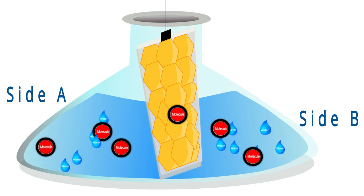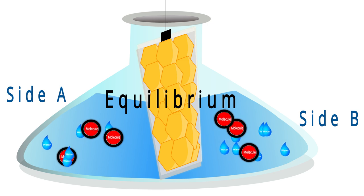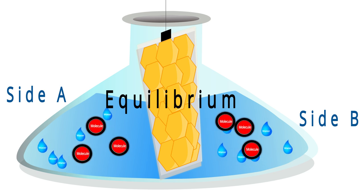The particles continue to move back and forth between side A and B until they come to equilibrium. That is, they move until the number of particles on each side is equal.